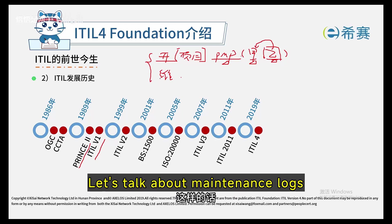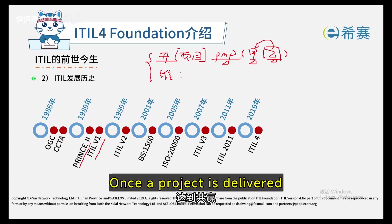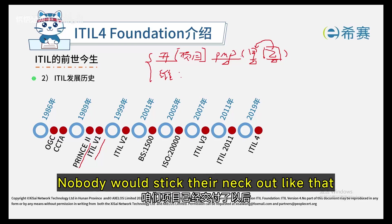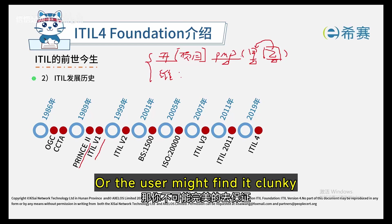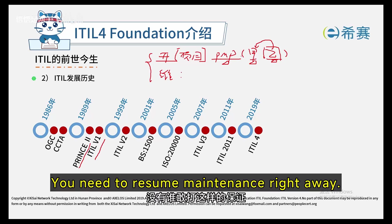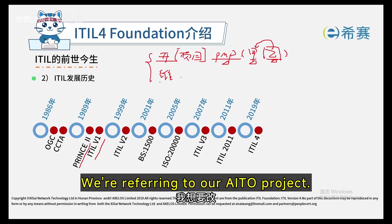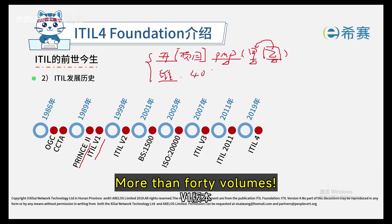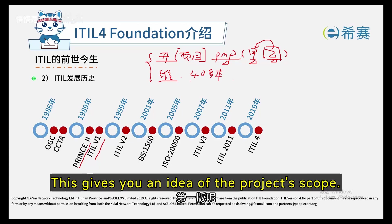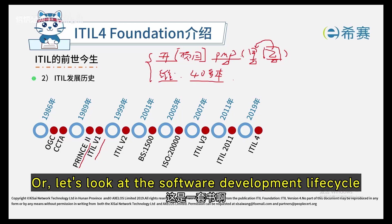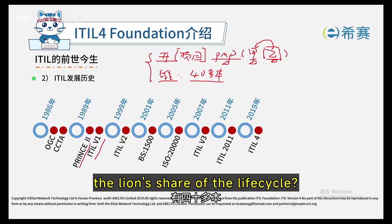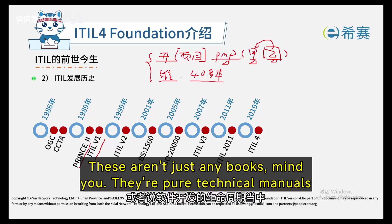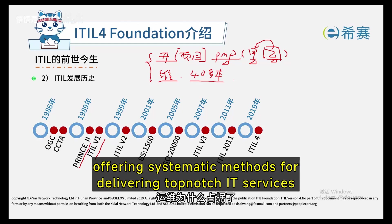Now, let's talk about maintenance logs. These logs primarily cover what happens once a project is delivered and goes live. You can't promise perfection — new feature requests might come up, the user might find it clunky and want improvements, or run into issues during use. You need to resume maintenance right away. So about these maintenance notes — we're referring to our ITIL project version 1.0, the initial release. This first edition is actually a whole collection of books — more than 40 volumes. It's an enormous amount of material. Operations and maintenance take up the lion's share of the lifecycle, which sparked a notable boom in literature on the subject. These aren't just any books — they're pure technical manuals offering systematic methods for delivering top-notch IT services, all starting from the customer's point of view.